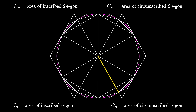The radius of the circle is 1, so this highlighted distance is 1. Now let's let a be the distance from the center of the circle to the side of the regular inscribed n-gon, and let b be the distance from the center of the circle to the vertex of the circumscribed regular n-gon. Let c be half the length of the side of a regular n-gon, and let d be half the side length of the circumscribed 2n-gon.